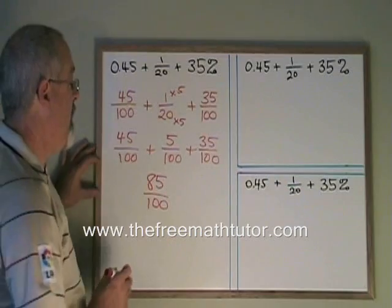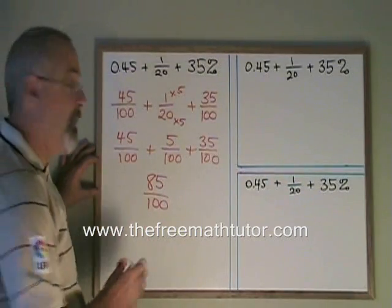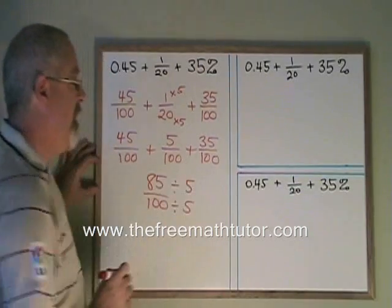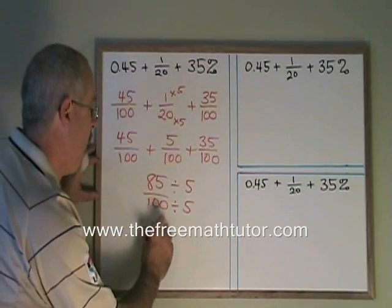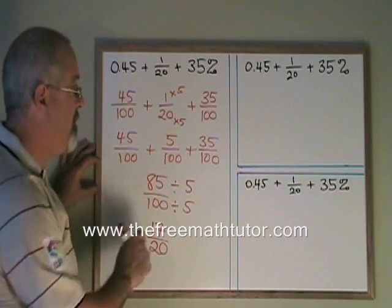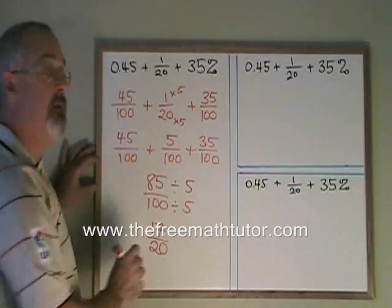This can be reduced though. 85 and 100 have a common factor of 5. If I divide both of them by 5, I end up with 17 over 20, which cannot be reduced further or simplified further. That's my final answer in fraction form.